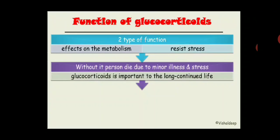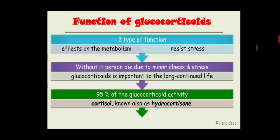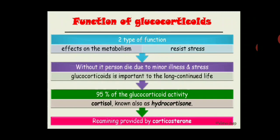95% of the glucocorticoid effect is due to cortisol, also known as hydrocortisol. It is the end product of the glucocorticoid pathway discussed in our previous lecture. The remaining glucocorticoid activity is provided by corticosterone, which is an intermediate product of the mineralocorticoid synthesis pathway, yet has 5 to 10% glucocorticoid activity as well.